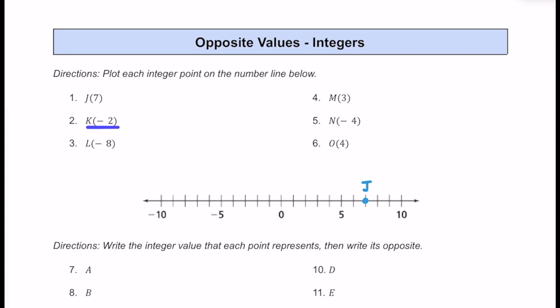For number two, we have k, which is located at negative 2. Here is 0, here is negative 5. Negative 1 would be here, and negative 2 would be here. So I'm going to go ahead and put a dot at the second line to the left of 0, and that's where k is going to be. For number three, we have l, which is negative 8. Here's negative 5, negative 6, negative 7, negative 8. So it's going to be a little bigger than negative 10, to the right of it, but it's definitely smaller than negative 5, so that's going to be l.